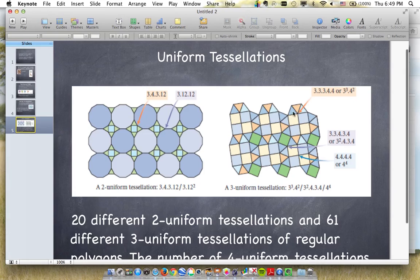When we have three vertex arrangements, we call that a three-uniform tessellation.